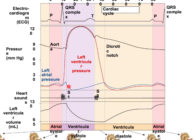As the pressure in the atria drops below that of the ventricle, we get closure of the AV valves. The AV valves close once atrial pressure is lower than ventricular pressure, and this closure makes the S1 sound — the lub sound.